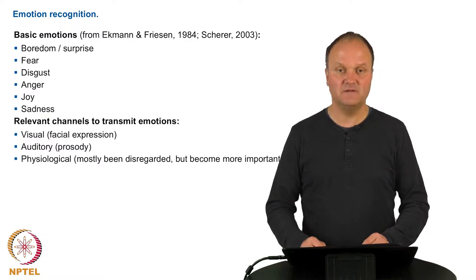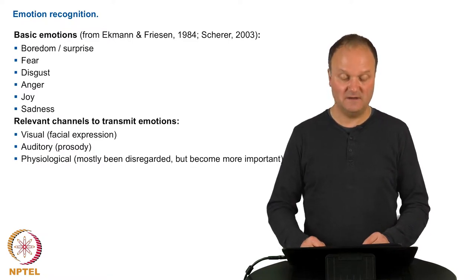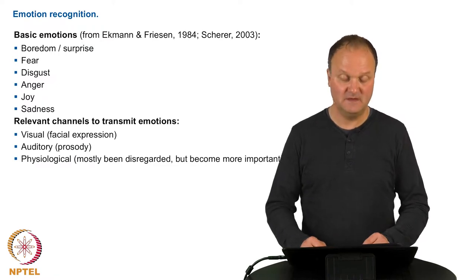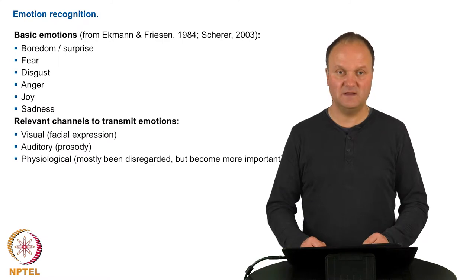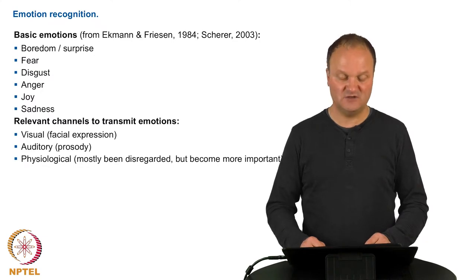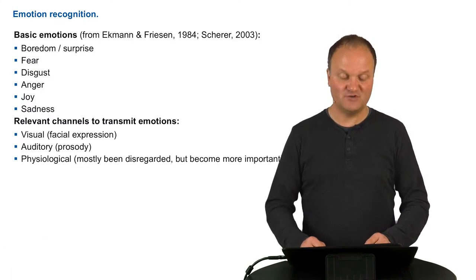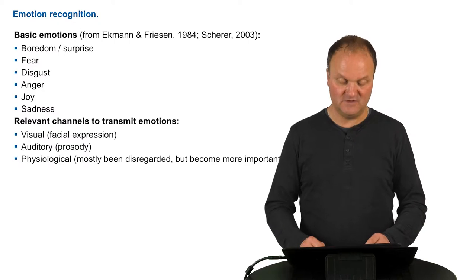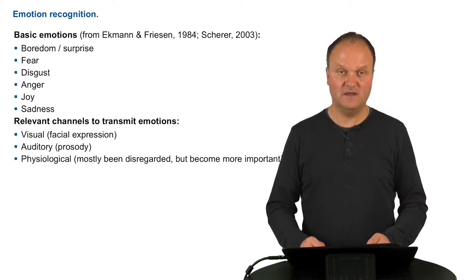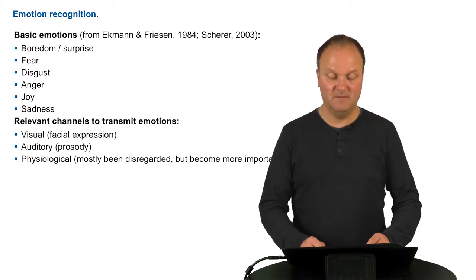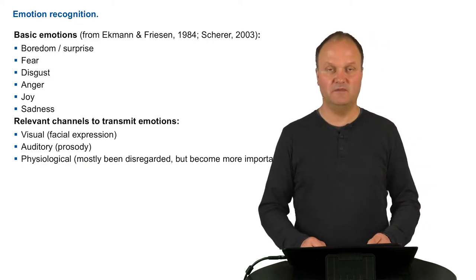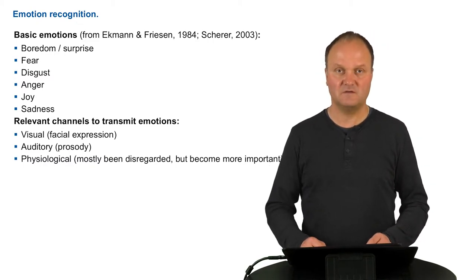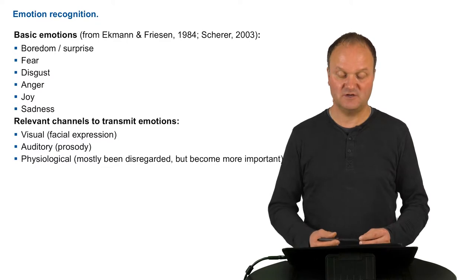These emotions are transmitted through different channels, mainly the visual channel and facial expression, and the auditory channel, mainly including the prosody — that is the movement of the pitch, the energy, and the duration of the speech signals. They are also shown in a physiological way, which has been largely disregarded in the past but becomes more and more important with the availability of sensors to capture these physiological signals.